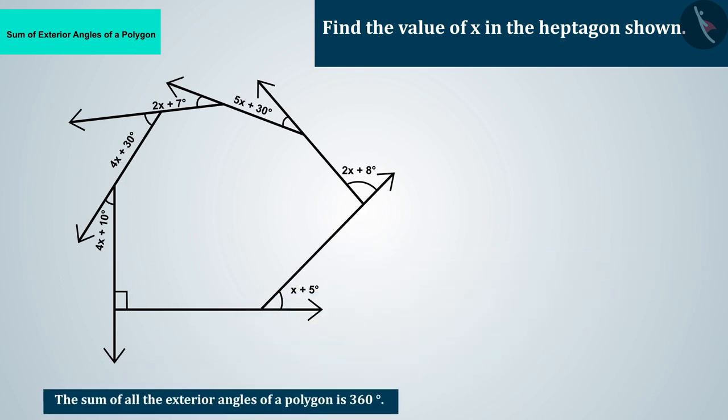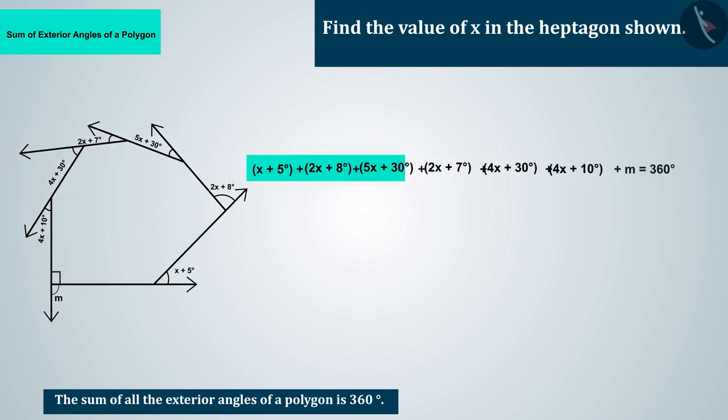But here, we can see the measurement of only six external angles of the heptagon. Let us name this seventh external angle measure as M. And let's write this equation.